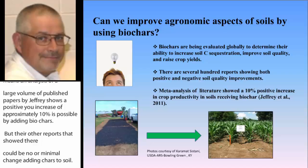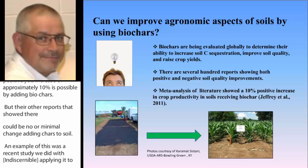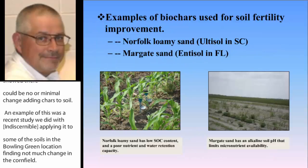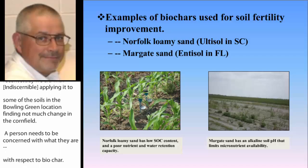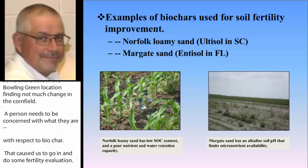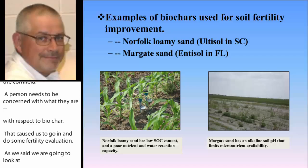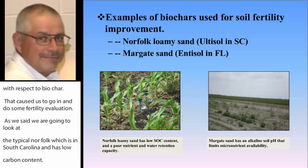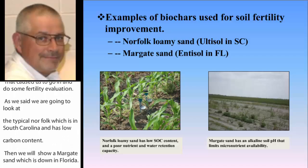That caused us to go in and do something. We're going to look at a typical Norfolk, which is an Ultisol in South Carolina with low carbon content, and a Margate sand, which is an Entisol in Florida. The Margate has a unique problem — when you walk the soil, there are seashells at the surface. Seashells indicate alkaline soil pH values, and alkaline pH values cause limits in soil micronutrients, particularly copper, zinc, boron, and manganese, causing irregular growth and color discolorations in the crop.